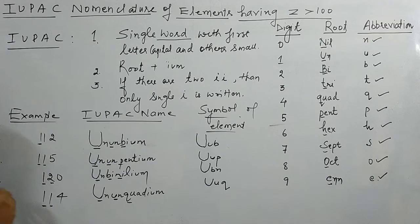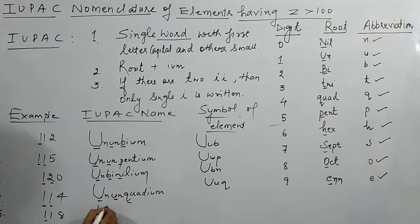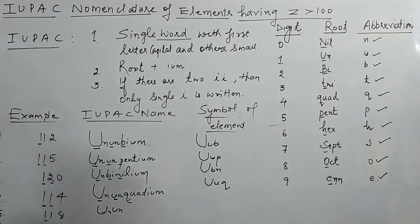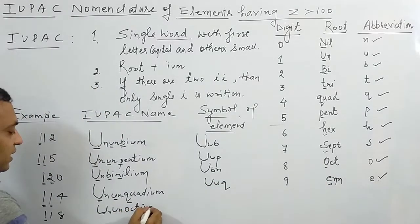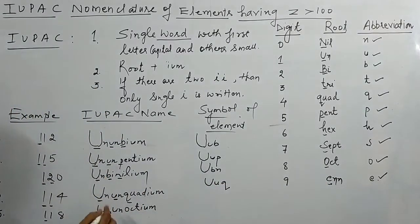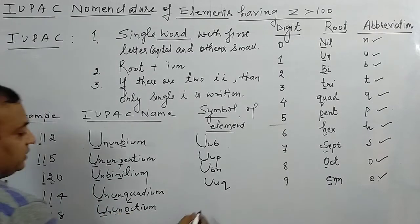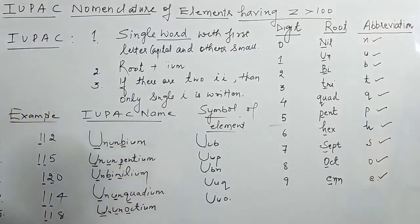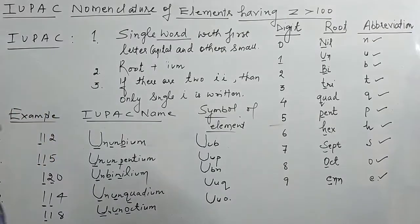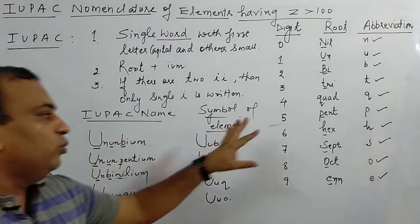Fifth example: atomic number 118 — digits 1, 1, 8. For 1 → un, again 1 → un, for 8 → oct. Add IUM: un-un-oct-ium, giving IUPAC name Ununoctium. For the symbol: un → U, un → u, oct → o. So the symbol is Uuo.